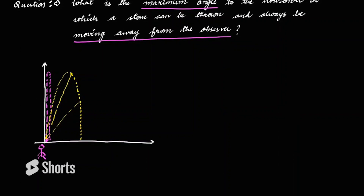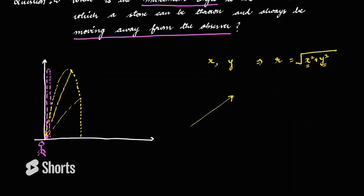One conventional way is to find x, find y, compute the position as √(x² + y²) as a function of time, and differentiate with respect to time. But here is an interesting method: look at the position vector R and the velocity vector V. When the particle is moving away, the velocity vector makes an obtuse angle with the position vector. When the distance is decreasing, the angle between velocity vector and position vector becomes acute.